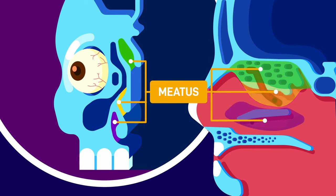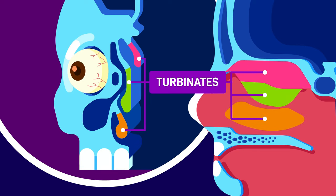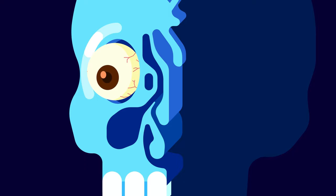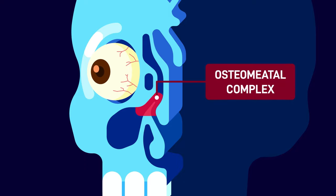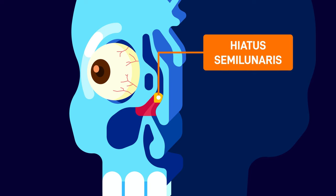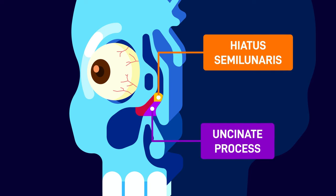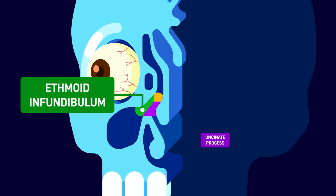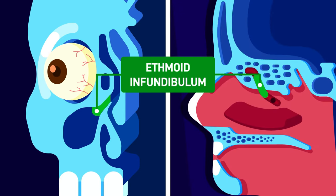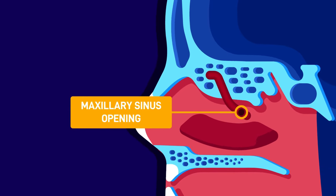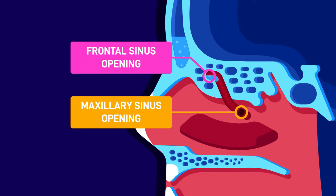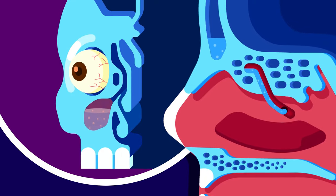The maxillary sinuses empty into the nasal cavity via the hiatus semilunaris, a crescent-shaped groove in the lateral wall of the nasal cavity inside the middle meatus. Meatuses are the space behind the turbinates, the bony projections inside the nose. The hiatus semilunaris is part of a unit called the osteomyatal complex, which consists of the hiatus semilunaris, the uncinate process — a bony hook projection from the ethmoid bone — and the ethmoid infundibulum, a curved channel that drains the frontal sinus. Since the maxillary sinus opening is located underneath the frontal sinus opening, mucus draining from the frontal sinuses can enter the maxillary sinus and lead to the spread of infection.